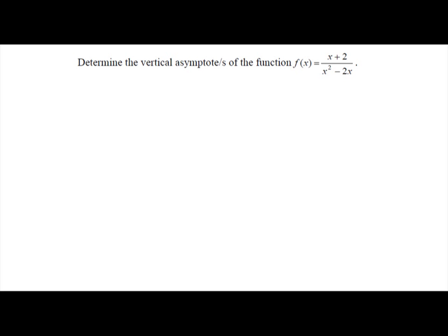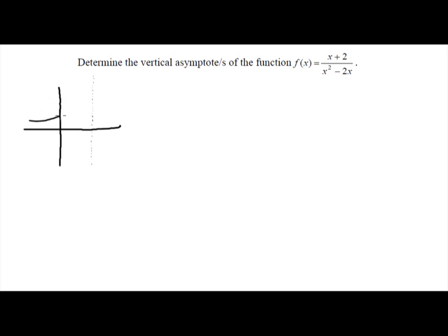The concept of vertical asymptotes is that in the graph — as we learned from algebra — a vertical asymptote is basically a vertical line, like a dotted line, that your graph will never cross. A graph can be approaching this line along one path on one side, and on the other side it can go up or down. The graph will not cross this line, and this line is what we call the vertical asymptote.